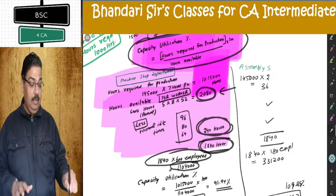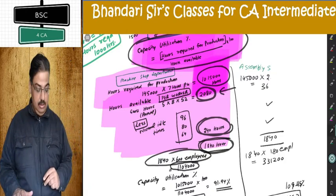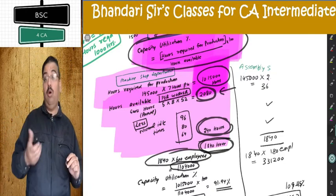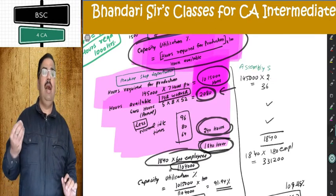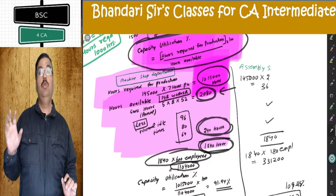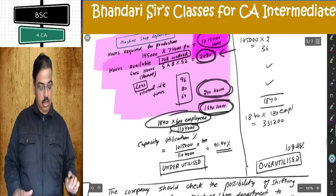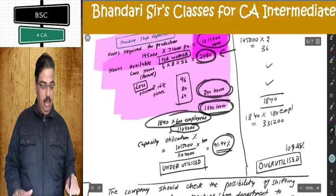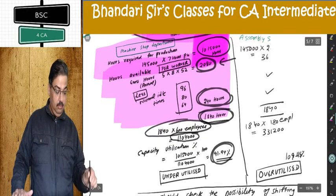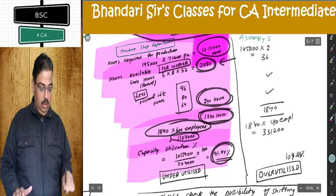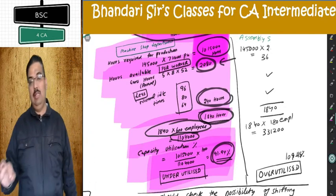You need 10,15,000 hours; you have availability of 600 × 1,840 = 11,04,000 hours. Is it under-utilized or over-utilized? On the face of it, it is under-utilized — there will be idle hours, you need less than you have. Capacity utilization ratio is computed as 91.94%. This is special — it is a unique question on this concept.